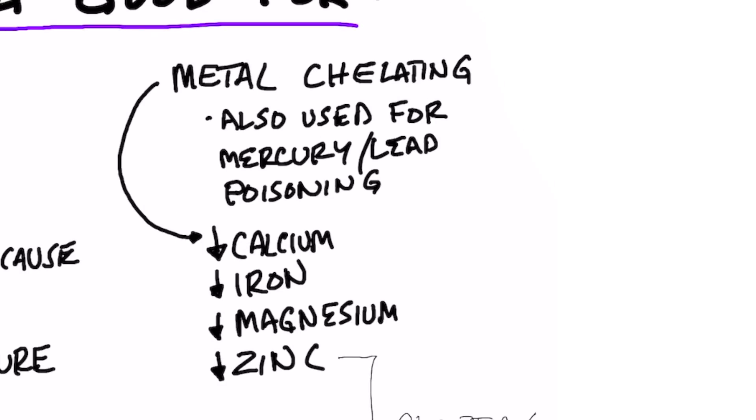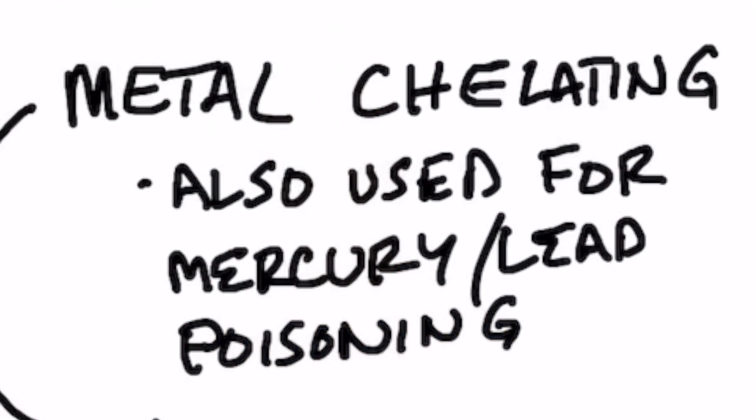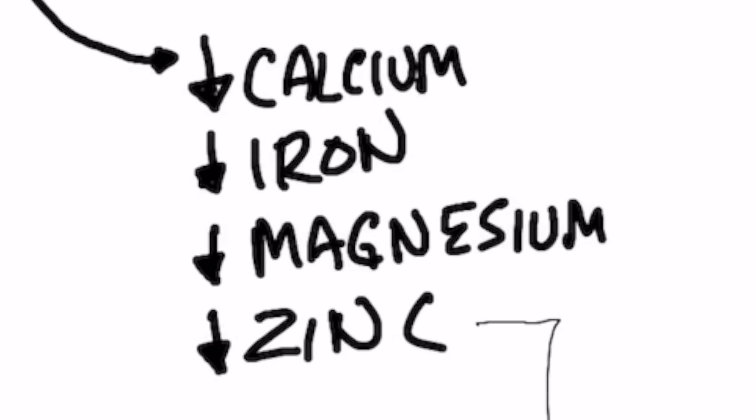The word chelate comes from the word claw. So when you chelate, you're actually binding with a metal and you pull it out. EDTA helps pull out certain metals and minerals from the body, and it's also good for getting rid of mercury and lead poisoning. So if you have too much calcium or iron, it can help pull those out.